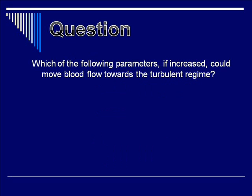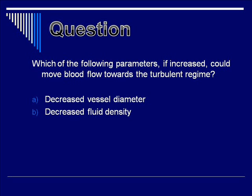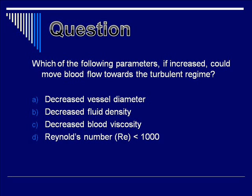Let's do a question. Which of the following parameters, if increased, could move blood flow towards the turbulent regime? Is it A, decreased vessel diameter? B, decreased fluid density? C, decreased blood viscosity? Or D, Reynolds number less than 1,000? You may pause to consider your response. The correct answer is C, decreased blood viscosity.